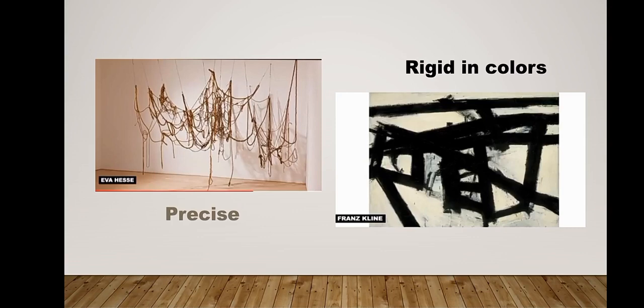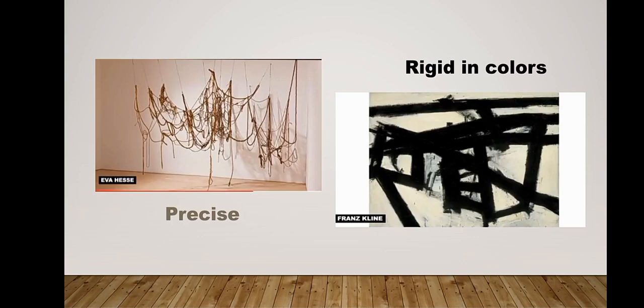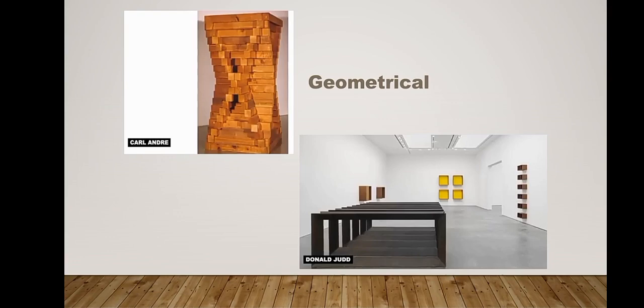Precise — it is exactly what it is; what you see is what you see. Rigid in colors — no sudden change in colors, and artworks of this period are preferably black and white. Geometrical — it uses shapes like squares, rectangles, lines, and other geometrical forms, as you can observe.